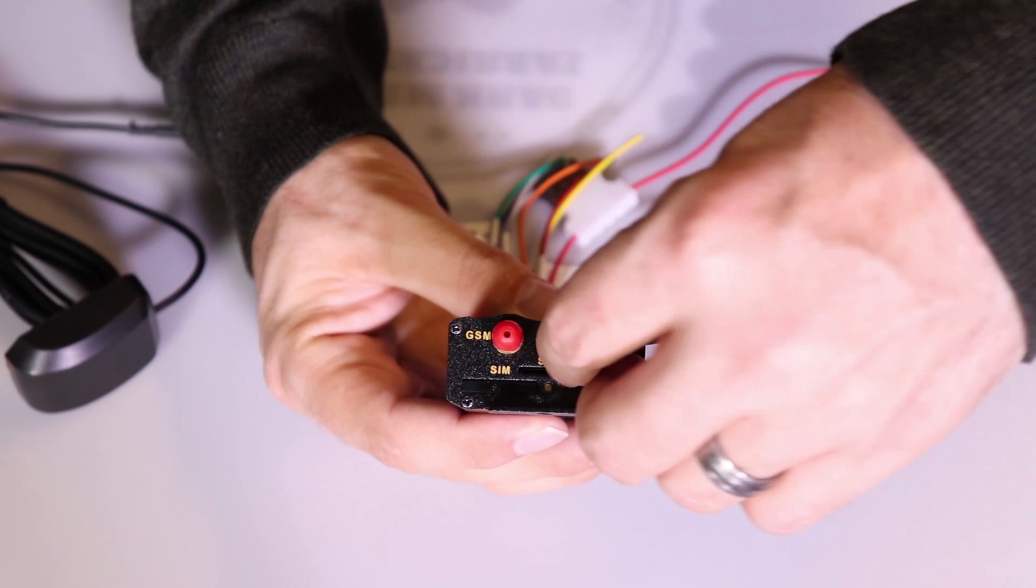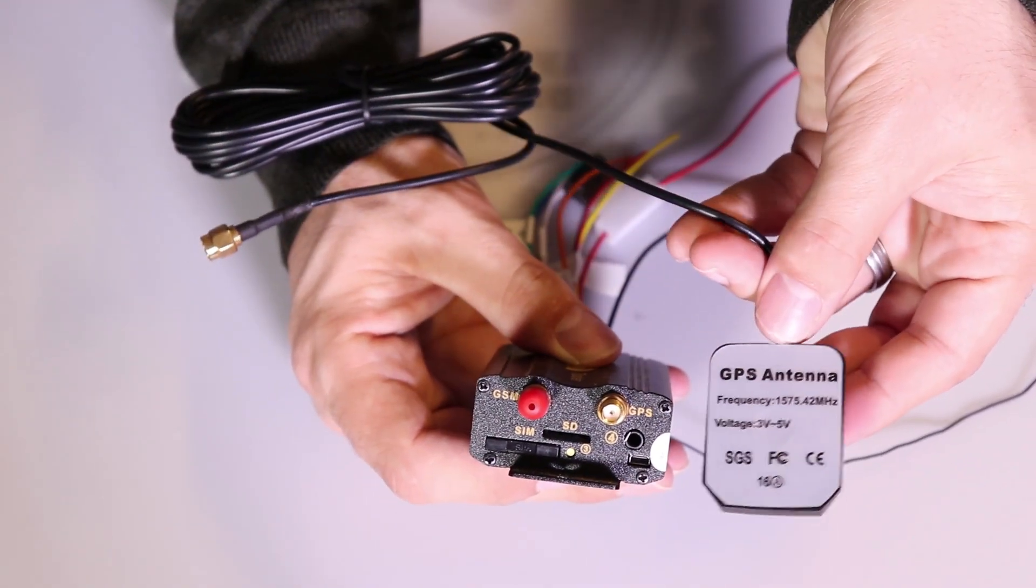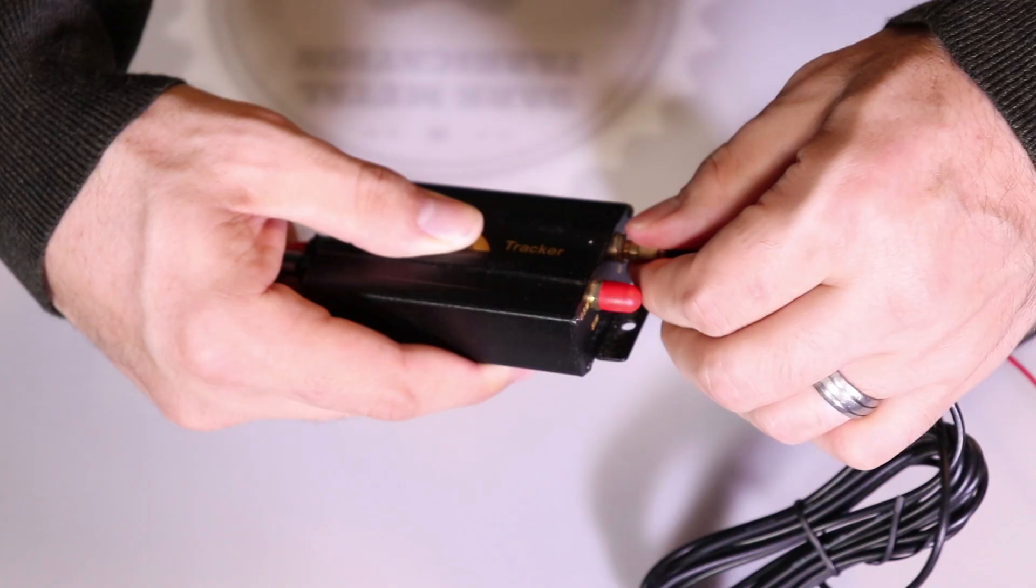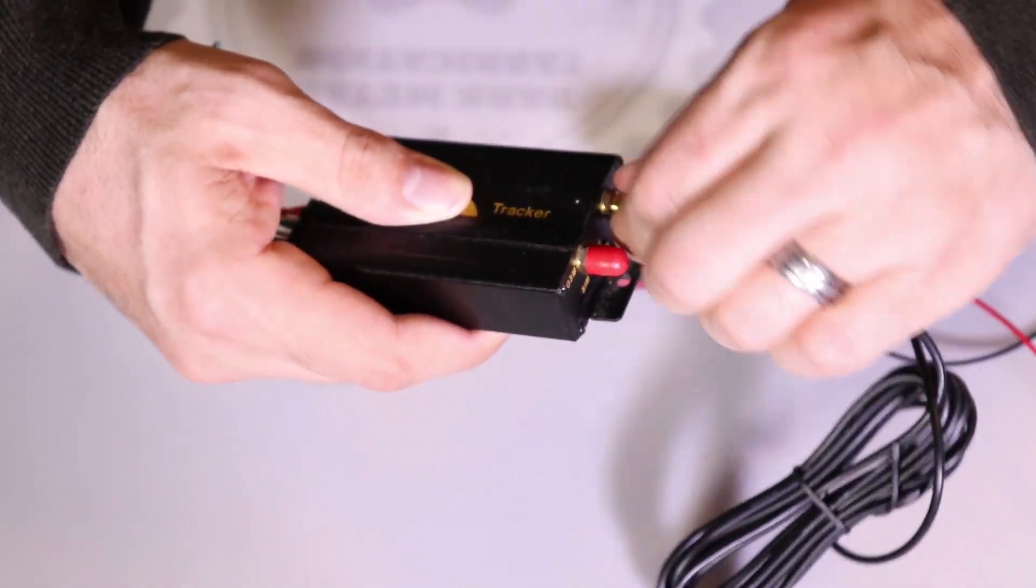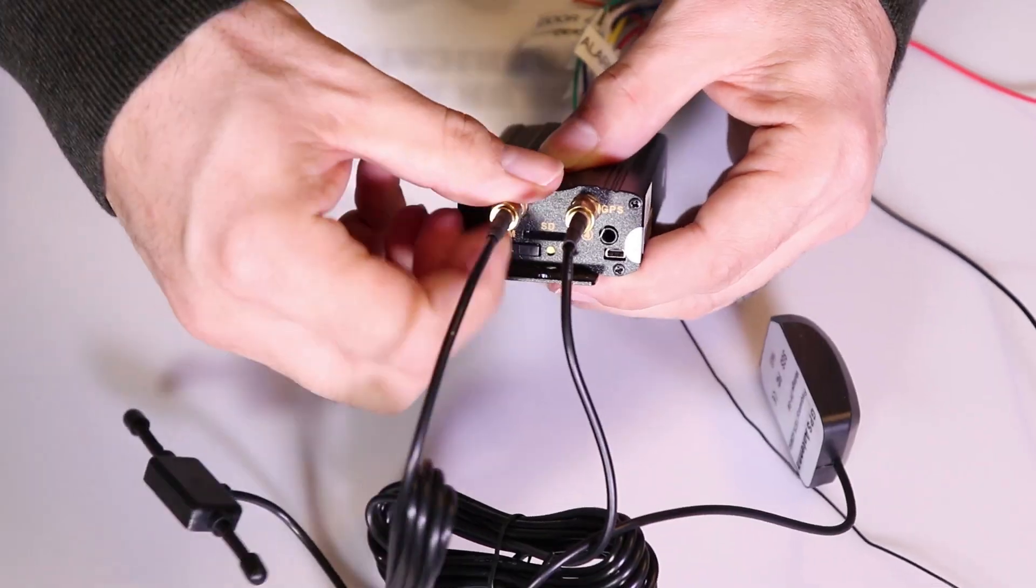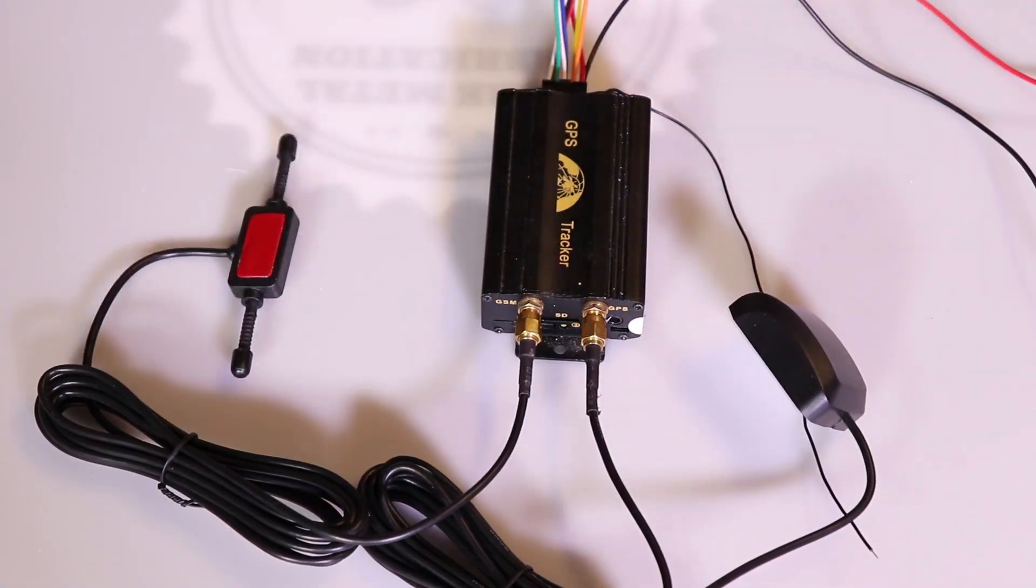All right, you can see on one side we've got GPS, on the other side we've got GSM. You want to make sure that you hook up the GPS antenna to the GPS port on the tracker itself. And now I'll go ahead and hook up the GSM antenna.